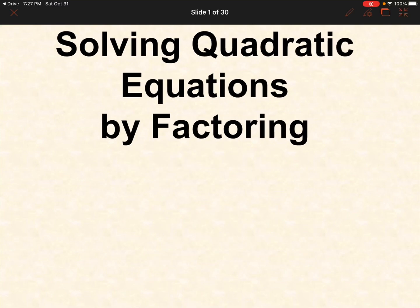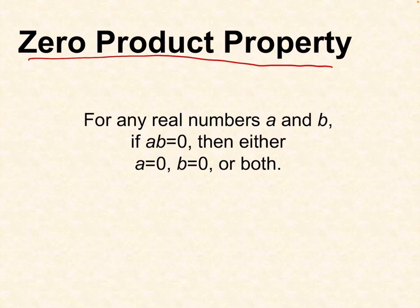Hello, this time we're going to discuss solving quadratic equations by factoring. We're going to first discuss the zero product property. For any real numbers A and B, if A times B equals 0, then either A equals 0 or B equals 0, or both A and B are equal to 0.